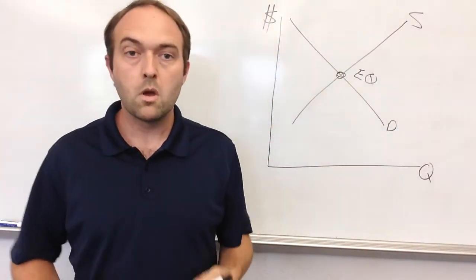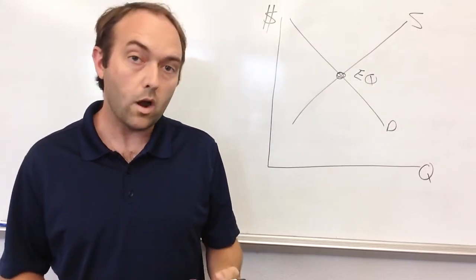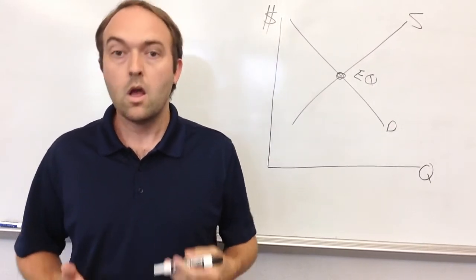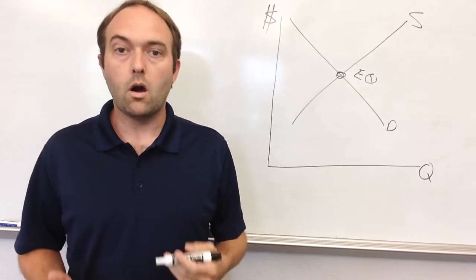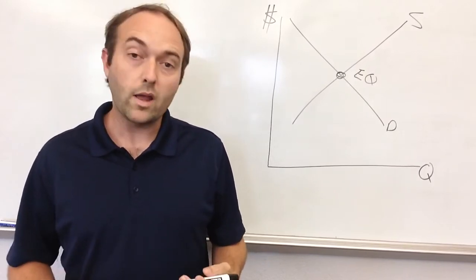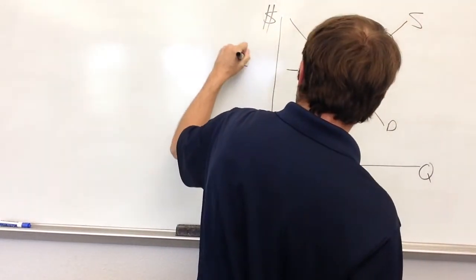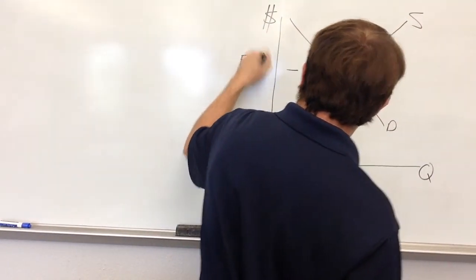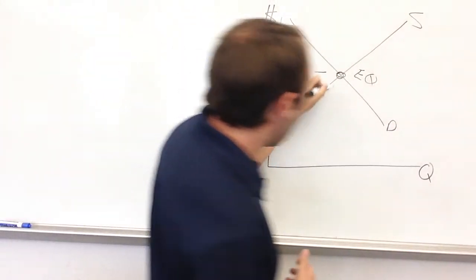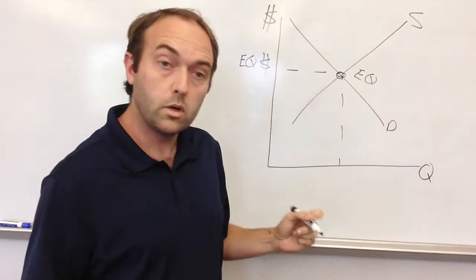At that point of equilibrium, we get two numbers. We get a quantity number and a price number. The quantity number, we call our equilibrium quantity. The price number, we call our equilibrium price. Label that here. Equilibrium price. And below, equilibrium quantity.